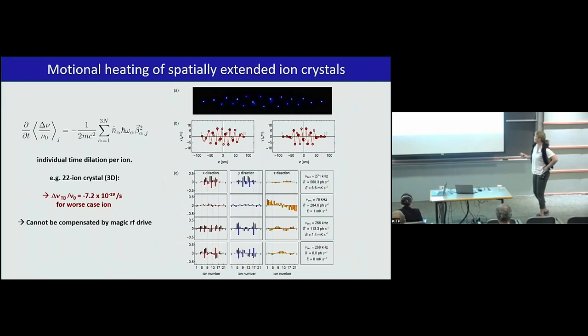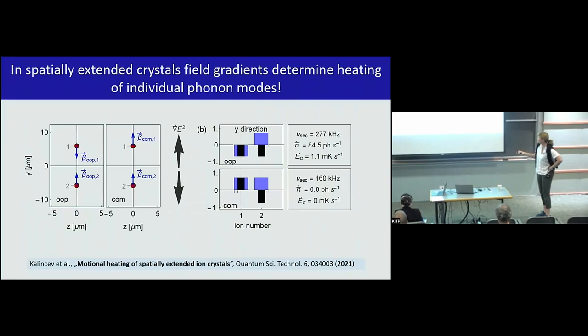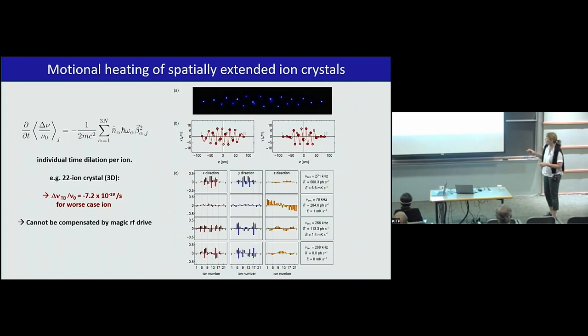We studied that very thoroughly, like here in a very simple two-ion system. It really depends on the motional mode you look at. Is it like a common mode, where ions move together, so you need a homogeneous electric field, or if the ions are moving out of phase, then you're looking really at the gradients. You have to really be careful about the different motional modes, how they're really heated in such a complex system.